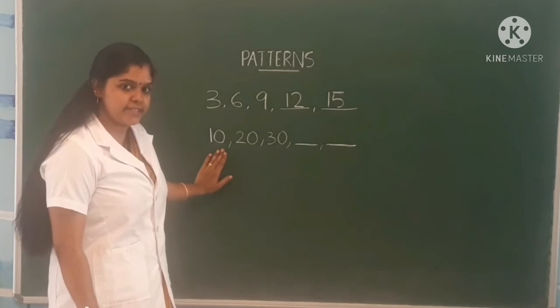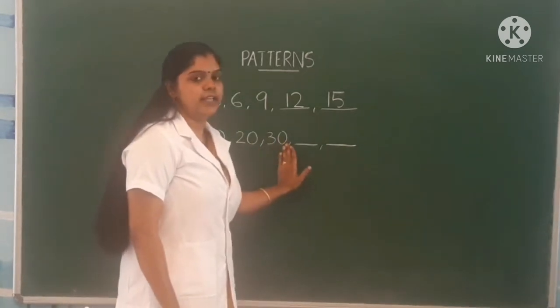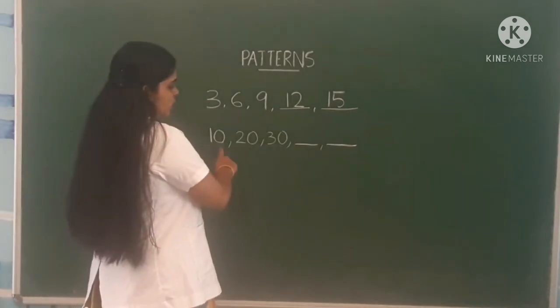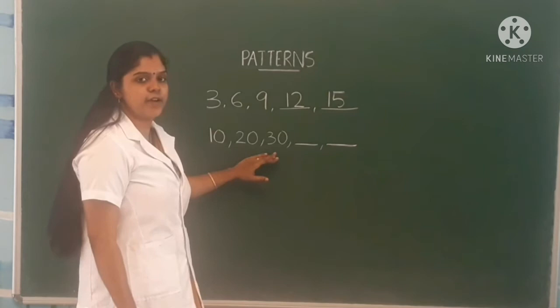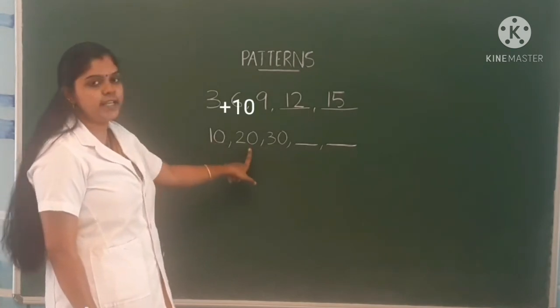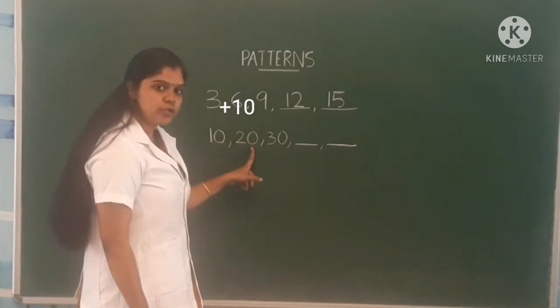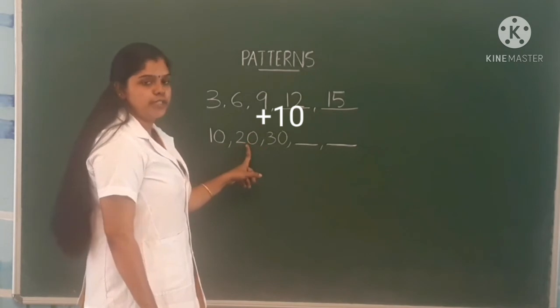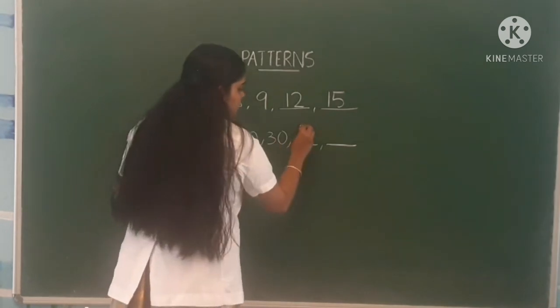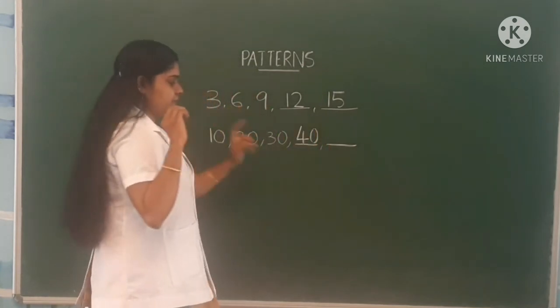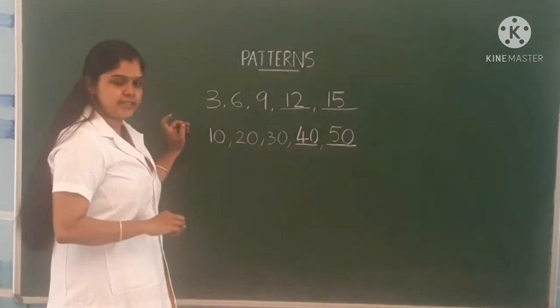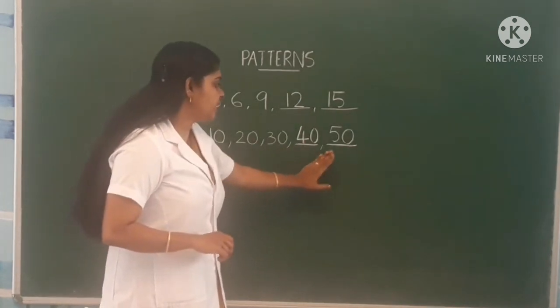And next number pattern: 10, 20, 30. And you have to fill these blanks. So how can you fill? By looking at the first 3 numbers, you can find that these are multiples of 10, or when we add 10 to each number, you will get the next number. 10 plus 10 equal to 20. Like that, when 10 is added to 20, you will get 30. Then when 10 is added to 30, you will get 40. Then when 10 is added to 40, you will get 50. Is it easy children? 10, 20, 30, 40, 50.